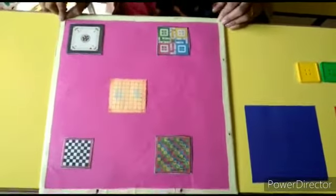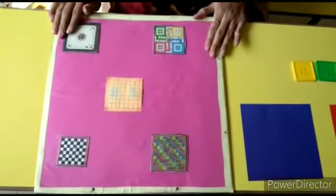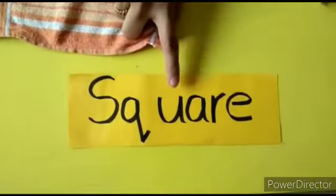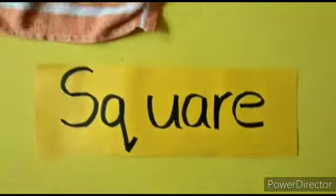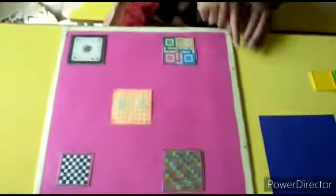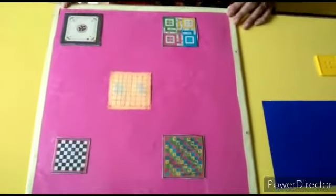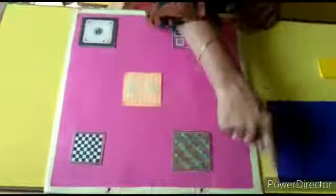So all the 4 sides are equal in length. If all the 4 sides are equal in length, we say the shape is a square. The shape is a square. So square has 4 equal sides.